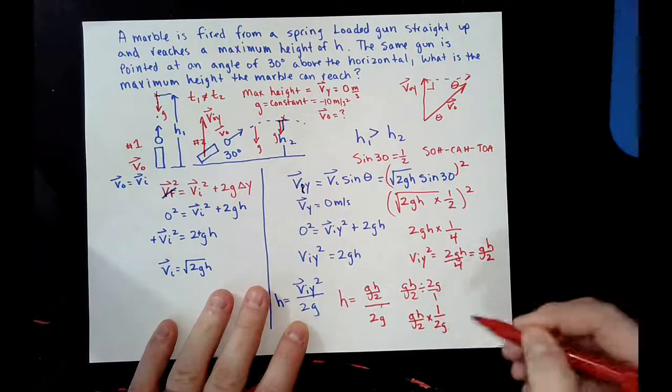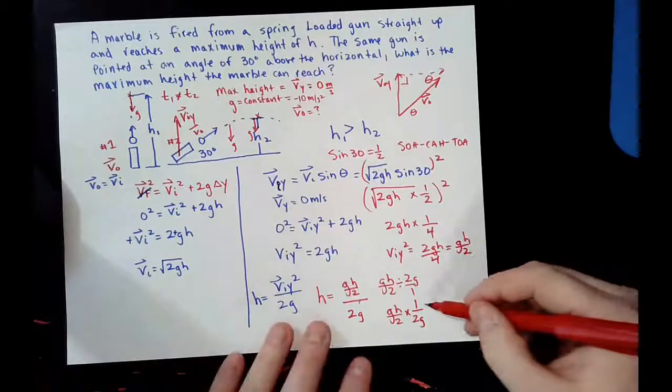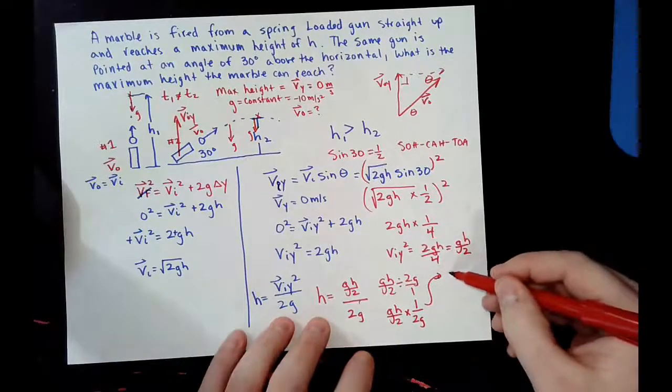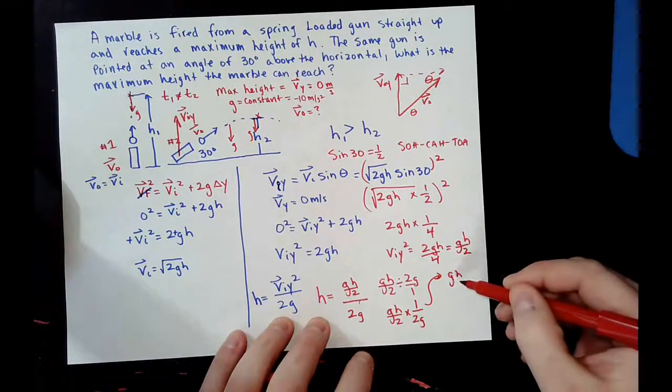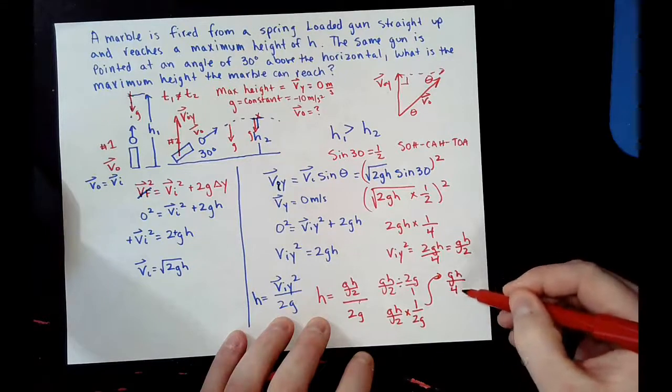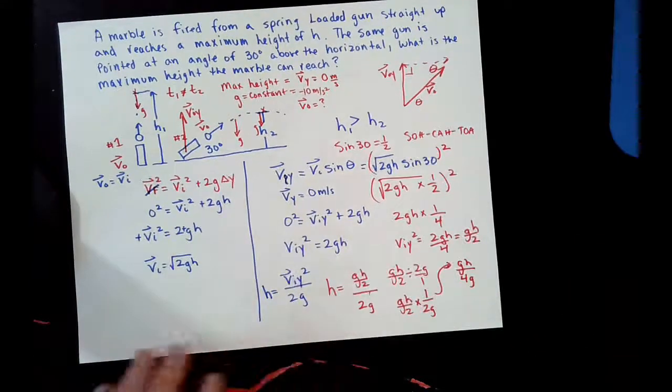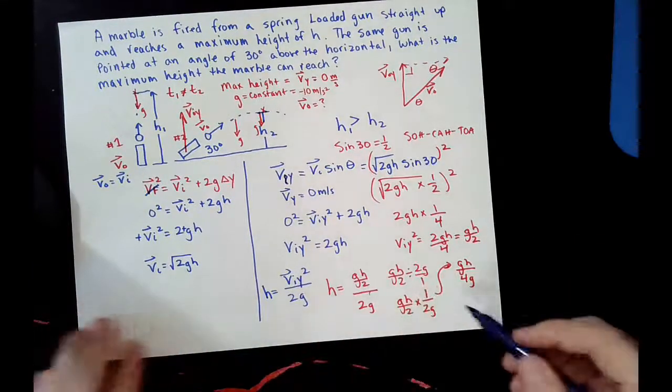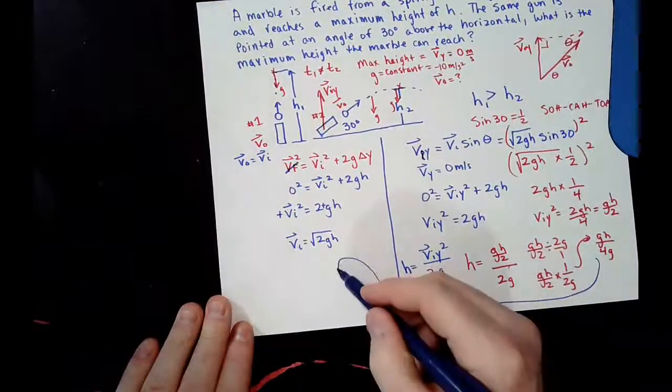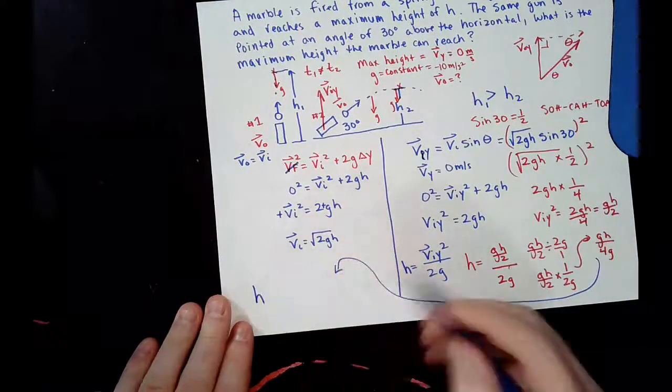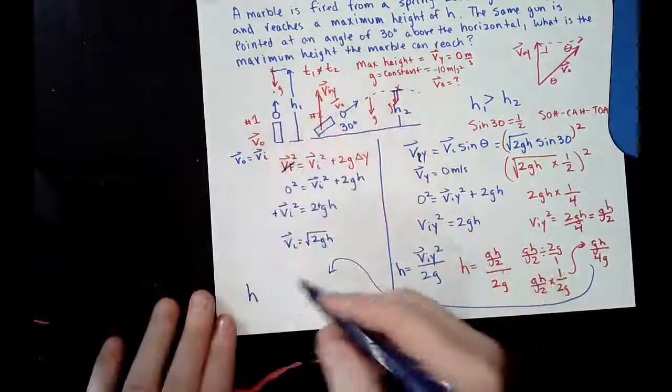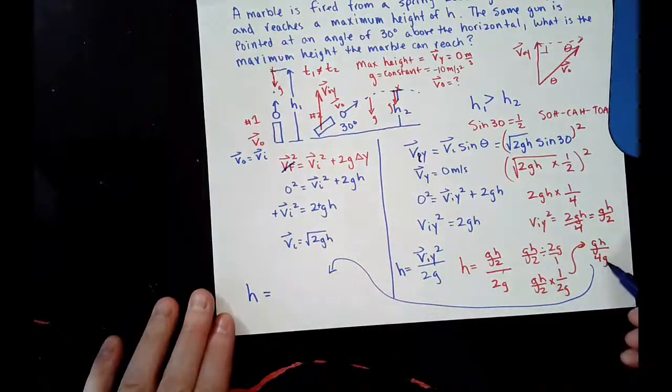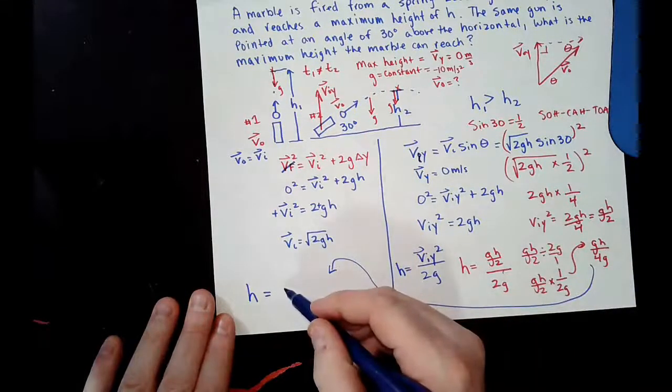So, this gives me gh all over 4g. And we can see here, sorry, I'm kind of drawing all this, that the height of the second one will be equal to, notice we have a g right here and a g right here, and that will cancel out. It will just be h over 4.